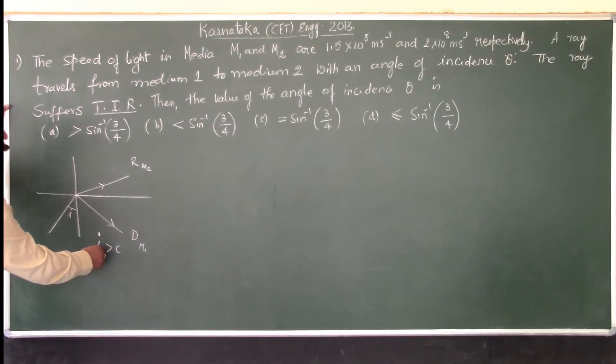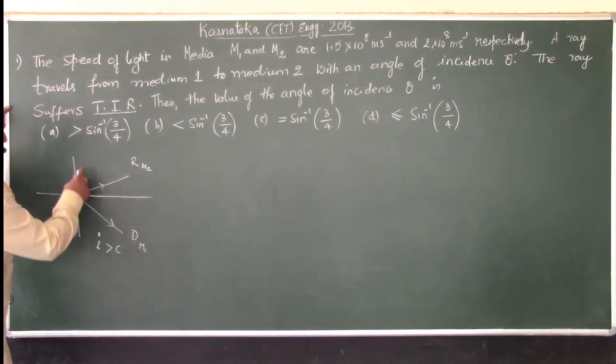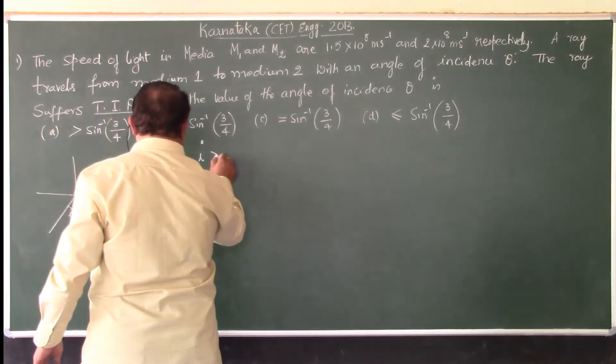So, the basic condition is that since total internal reflection is happening, the ray suffers total internal reflection, then I is greater than C.